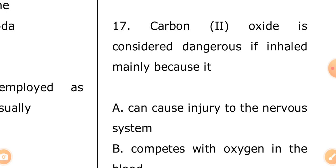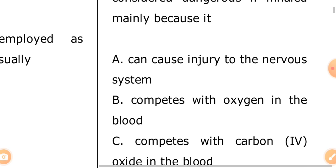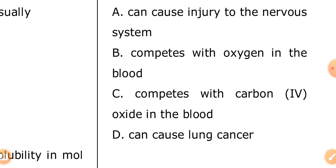Question seventeen: carbon monoxide (CO) is considered dangerous if inhaled mainly because — A: it can cause injury to the nervous system, B: it competes with oxygen in the blood, C: it competes with carbon dioxide in the blood, D: it can cause lung damage. The answer is B — it competes with oxygen in your blood.